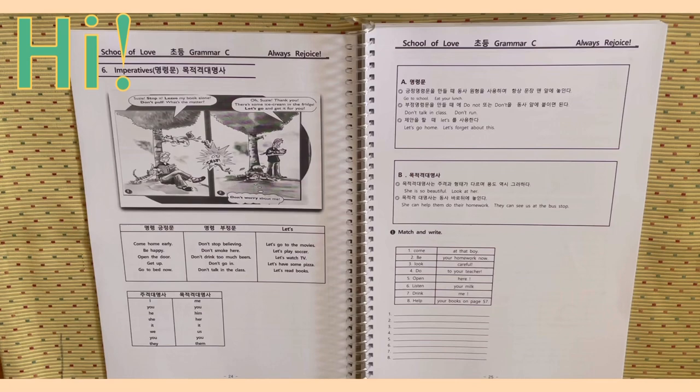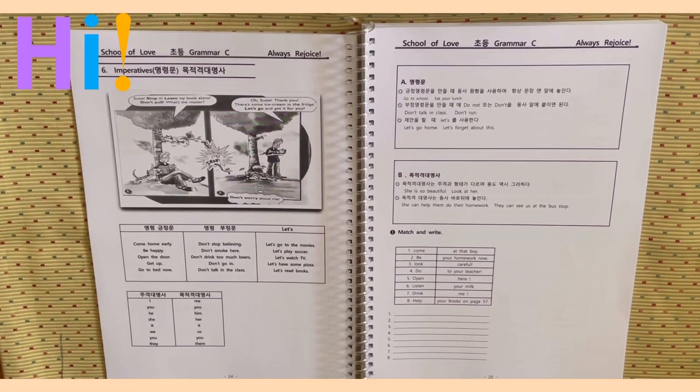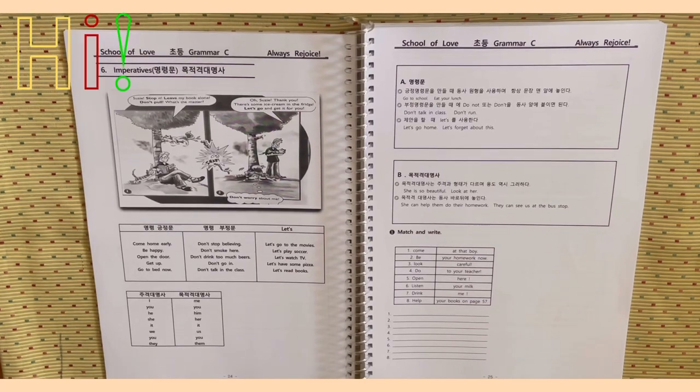I, me, you, you, he, him, she, her, it, it, we, us, you, you, they, them. Page 25.